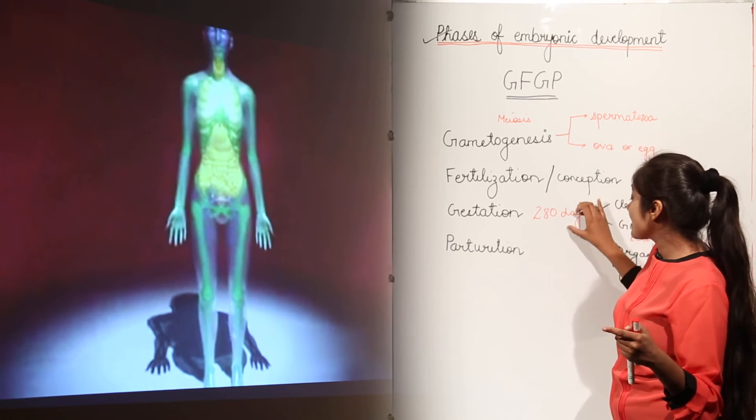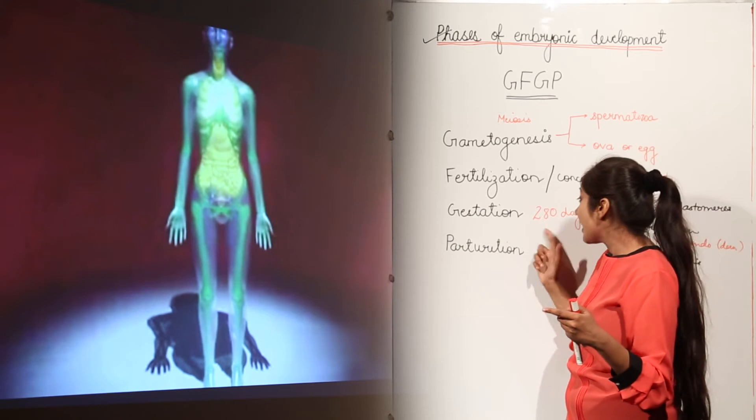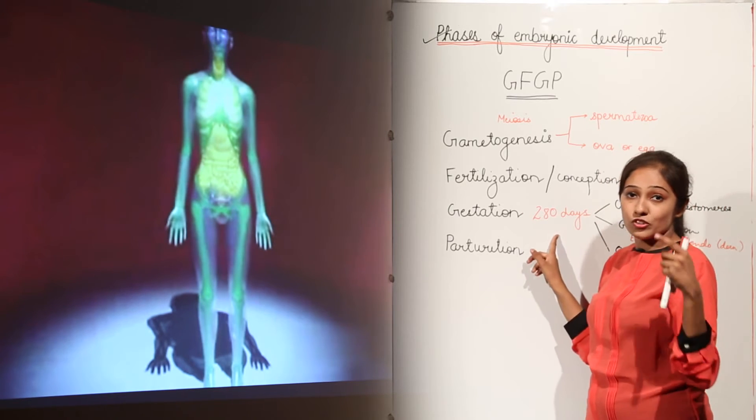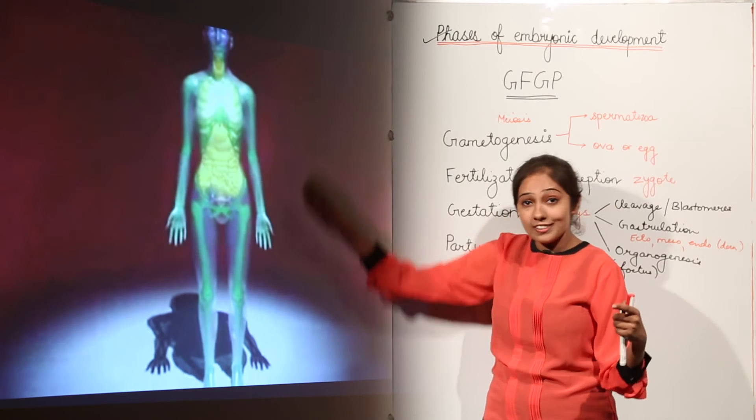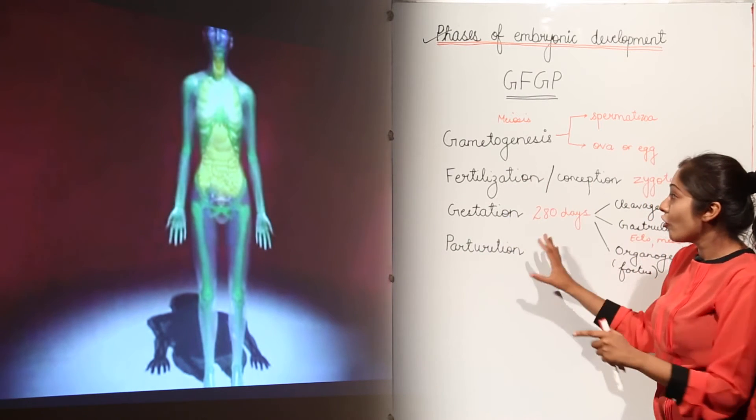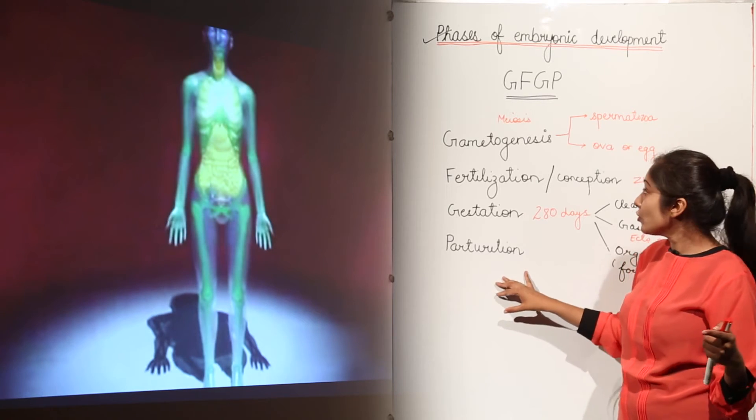So these 280 days are the days in which this development is going to take place from this single cell zygote to a complete organism as you have seen in the animation. So I hope now these four phases are very clear to you.